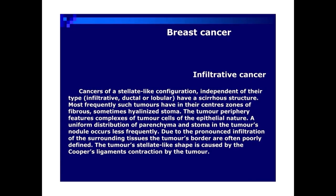Most frequently, such tumors have in their centers zones of fibrous, sometimes hyalinized stroma. The tumor periphery features complexes of tumor cells of epithelial nature. A uniform distribution of parent tumor and stroma in the tumor's nodule occurs less frequently. Due to the pronounced infiltration of the surrounding tissues, the tumor's borders are often poorly defined. The tumor's stellate-like shape is caused by contraction of Cooper's ligaments by the tumor.